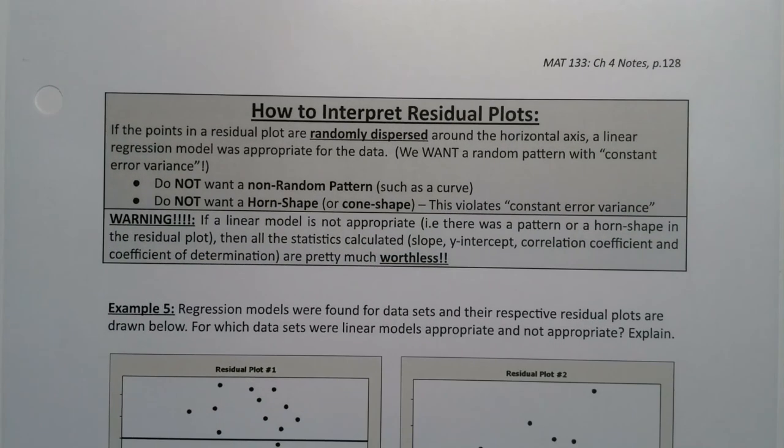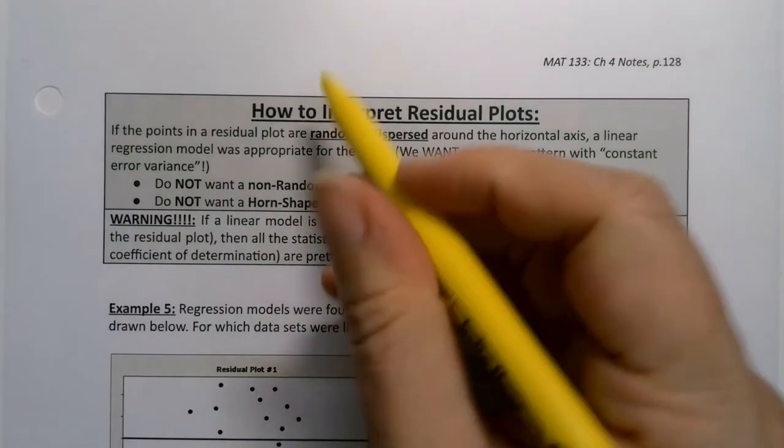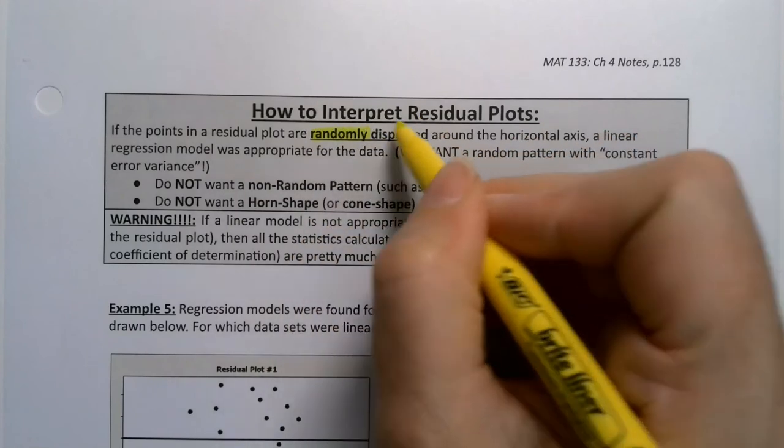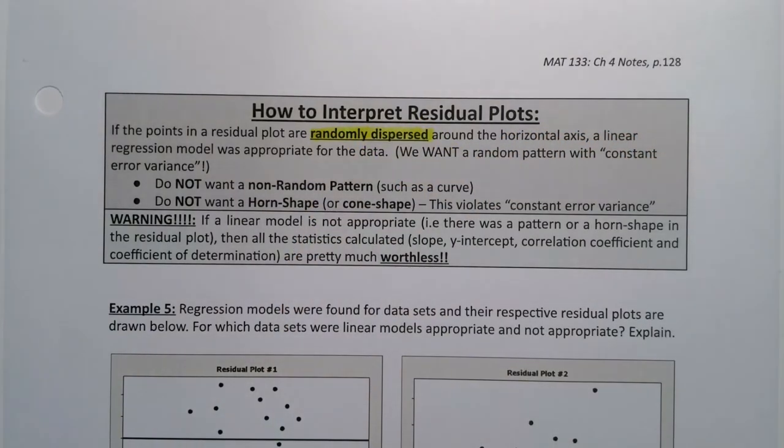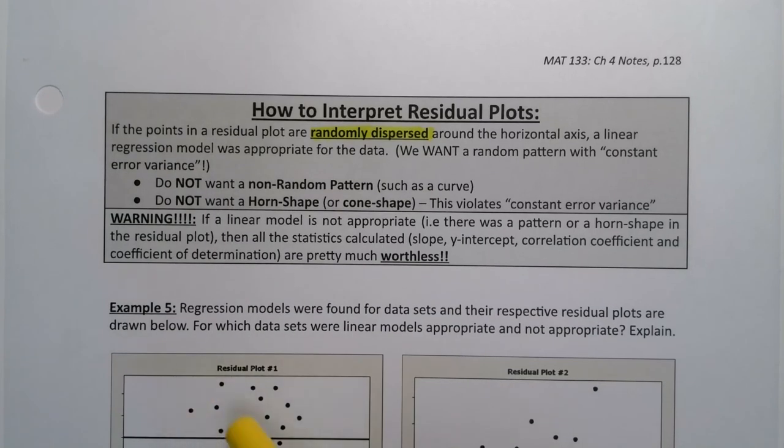You want the points to look randomly dispersed. That's what you want. So, you want it to look like somebody just threw the points up there, tossed them up. What you do not want is a non-random pattern or a horn or cone shape. Those are the bad things. So, you want a random pattern. A random pattern is called constant error variance. It means that all the points have the same amount of error. Because residual is just error.